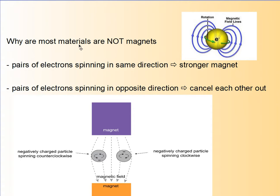Why aren't most materials magnets? Well, pairs of electrons spinning in the same direction cause a much stronger magnet. But if they're spinning in opposite directions, they actually cancel each other out. And the reality is, most materials have electron spins in opposite directions.